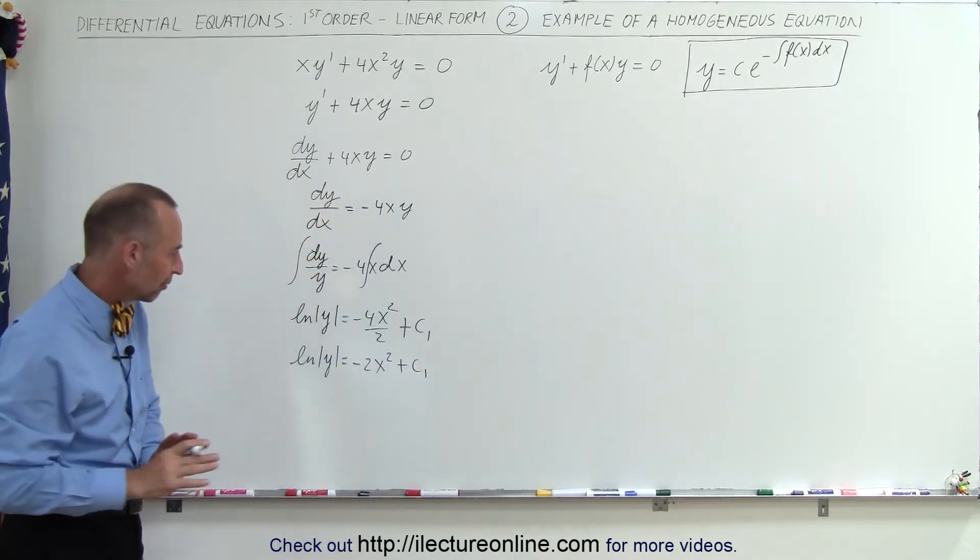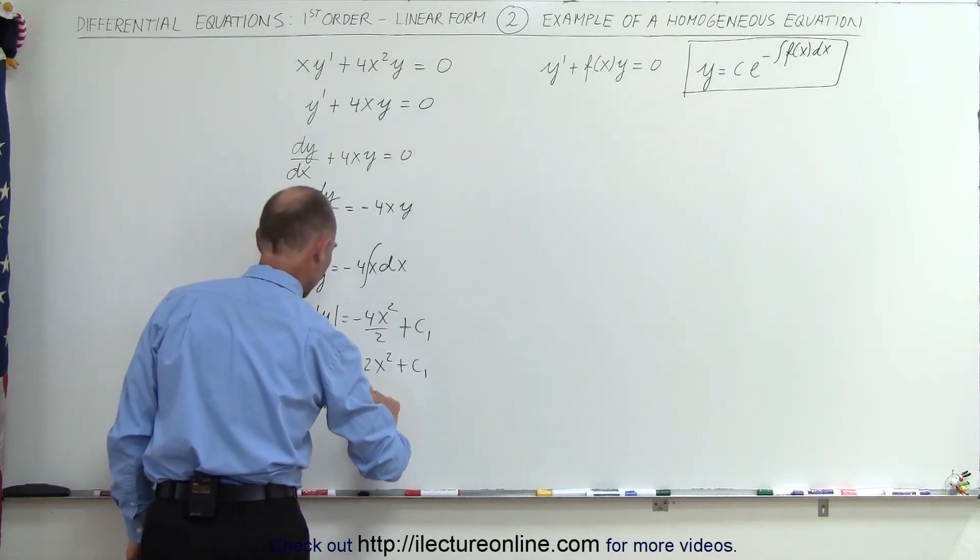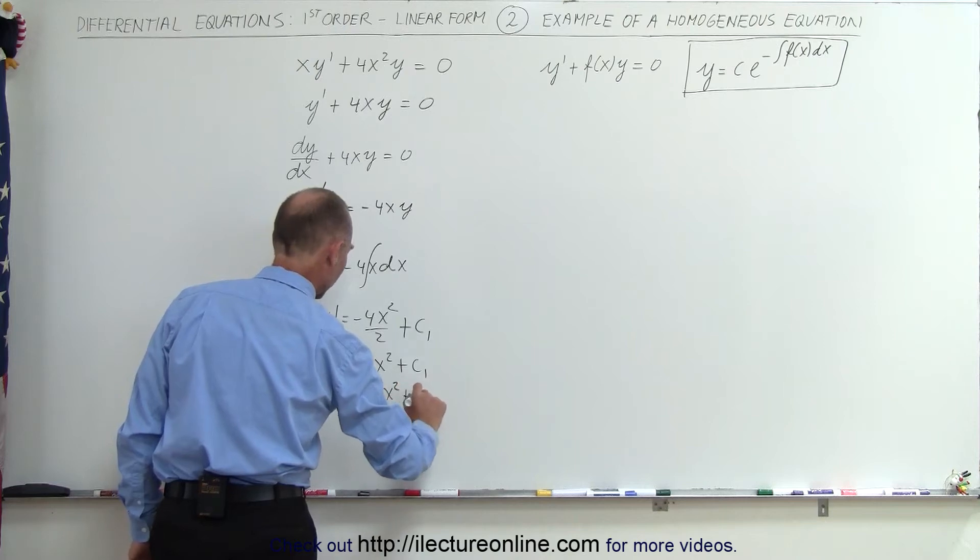Now if I take the anti-log of both sides, this becomes e to the natural log of y equals e to the minus 2x squared plus c1.